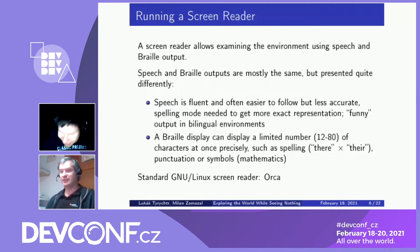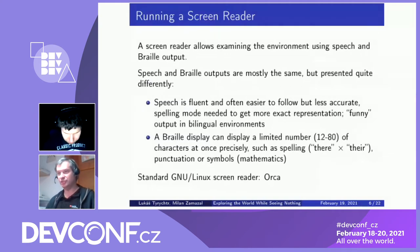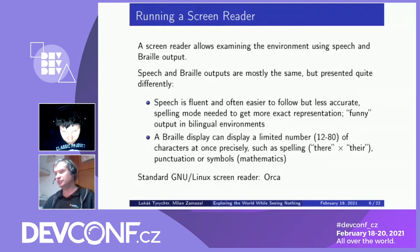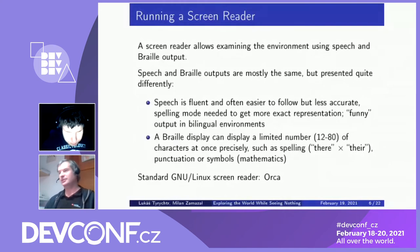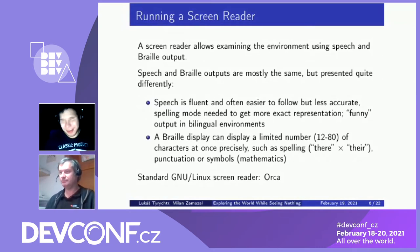The standard GNU Linux screen reader is called Orca and it's a piece of software that displays contents of applications using speech output or a Braille display device. Speech output is usually easier and faster to use but less accurate. If you need accuracy or perhaps silence, then a Braille display can come in handy. Also, Braille displays are limited to those eight dots per character or per place, while speech is more flexible with different voices, volume levels, speech rates, and so on.